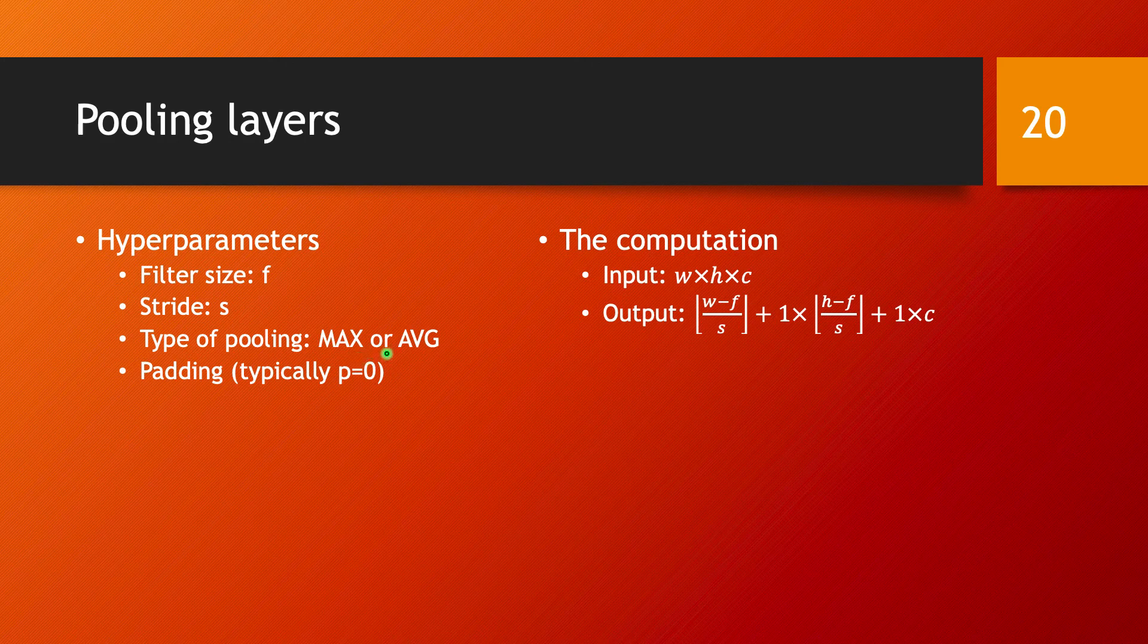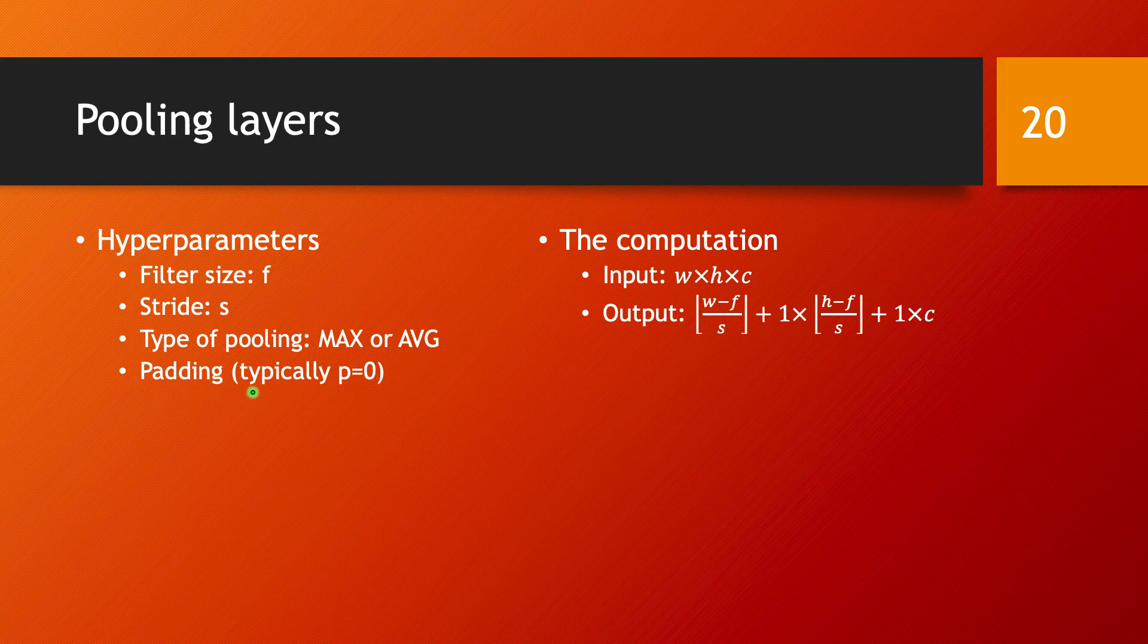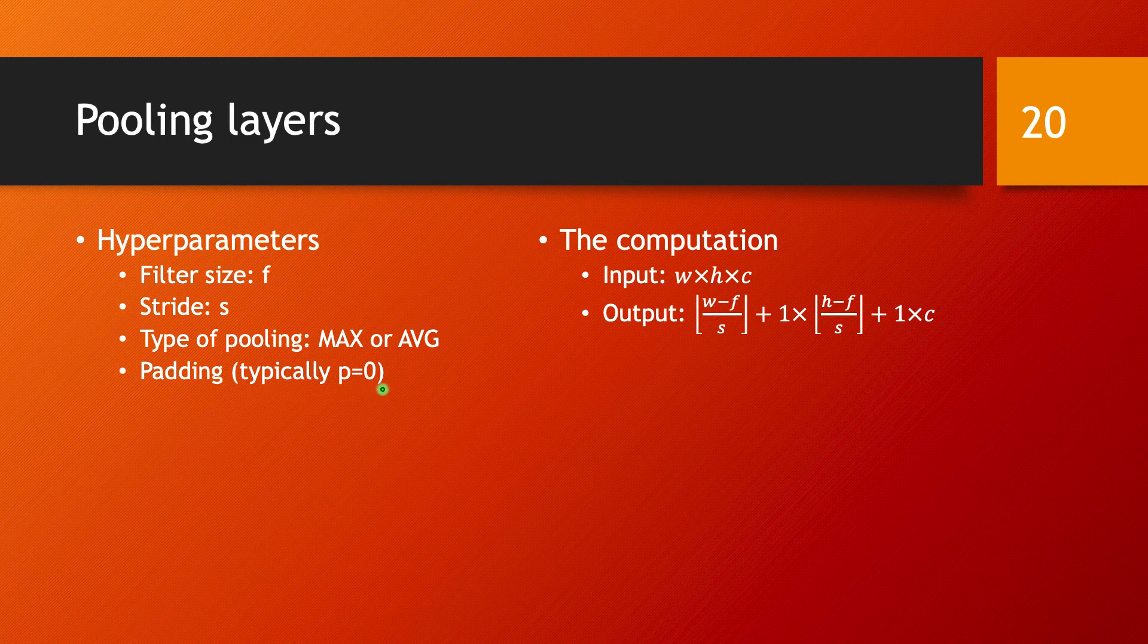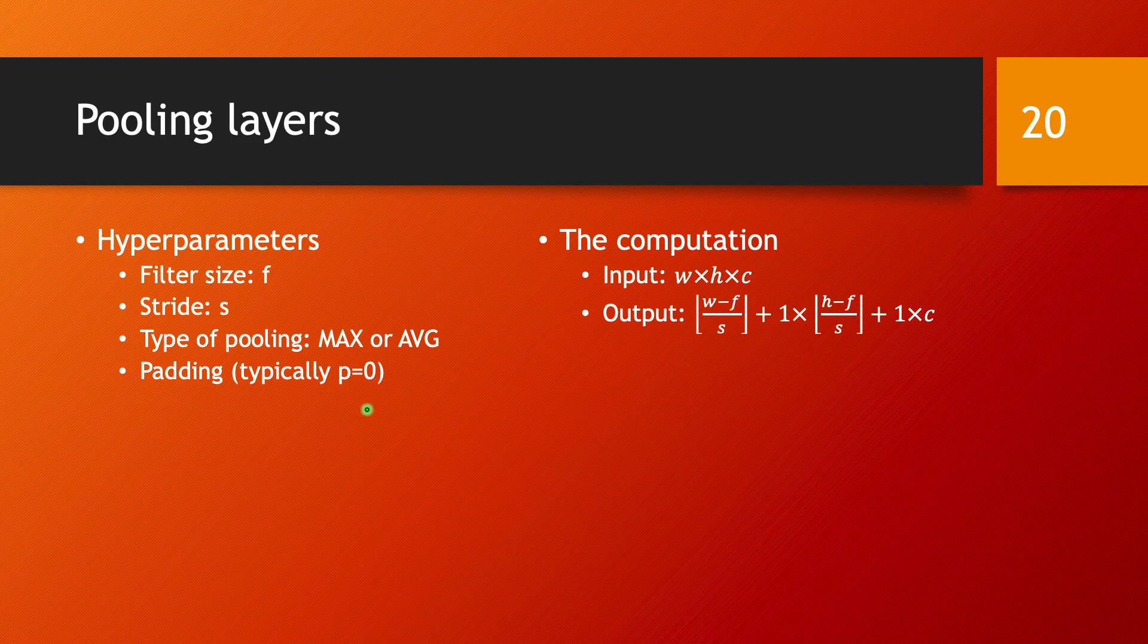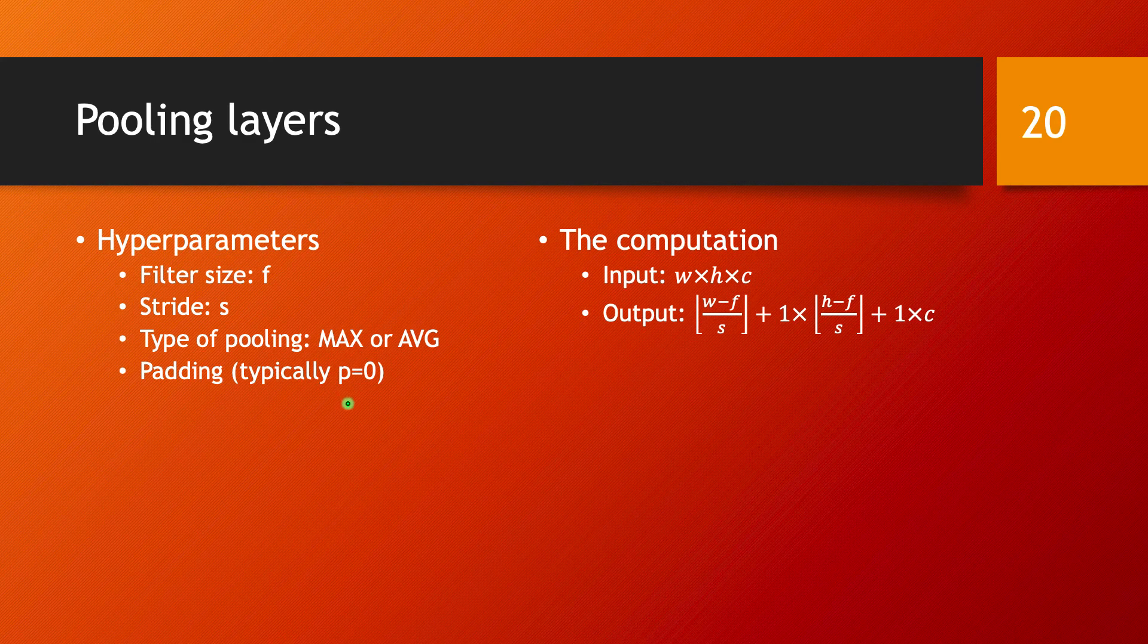In principle, you could also choose padding, although this is by far taken in almost all cases to be equal to zero. But in principle, you could also have padding. I just want to comment that in the vast majority of cases where you use pooling layers, the padding is going to be set up to zero. So whatever I'm commenting on in this slide, it's assuming that P is equal to zero. But as an option, you have it available if you really think that this is useful.